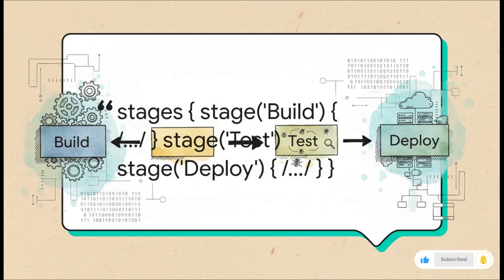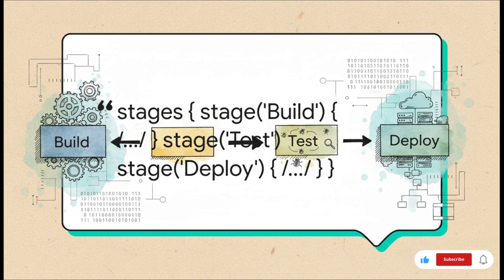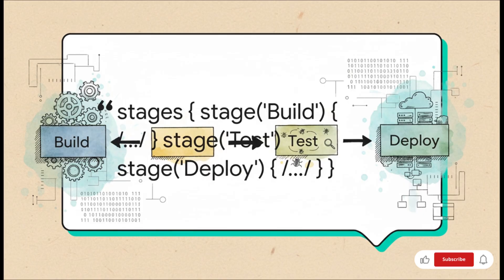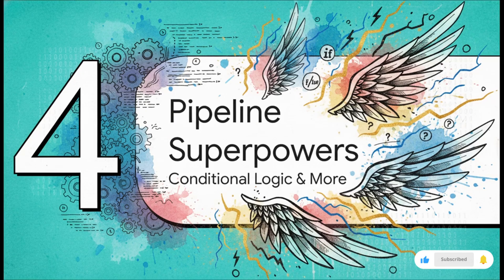Building on what we just did, we can add more stages — it's a pattern. We've added a Test stage and a Deploy stage, and Jenkins is smart enough to run these one after another in the order we define them. So it'll build, then if that succeeds it'll test, and if that succeeds it'll deploy. In just a few lines of code, we've mapped out a whole CI/CD workflow. It's clean, it's readable, and it's all right here in the code.